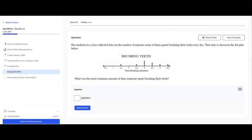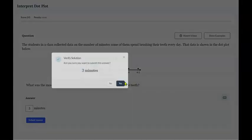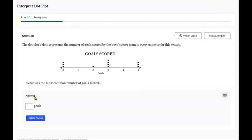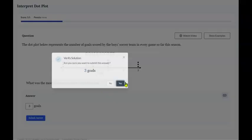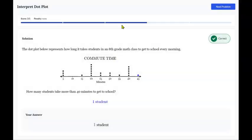Alright, now we're going to interpret some dot plots here. What was the most common amount of time someone spent brushing their teeth? Well, the highest dots are on three, so that's the most common time. What was the most common number of goals scored? Well, this one has the highest number. There were four people who scored three goals, so the most common number of goals scored was three. How many students take more than 40 minutes to get to school? So you look at 40, and it says more than 40 minutes. So these kids take exactly 40, so there would be one. One student that takes more than 40.